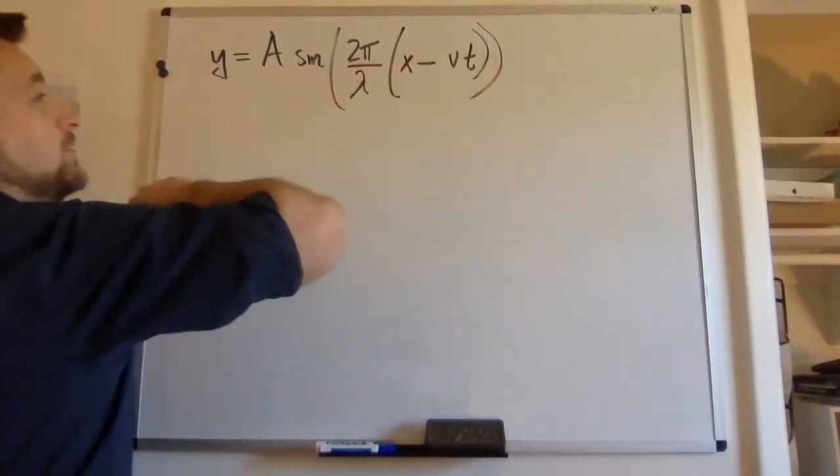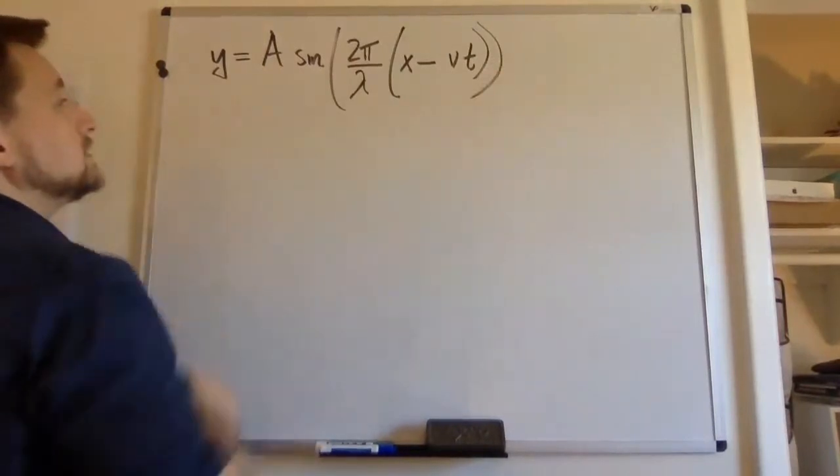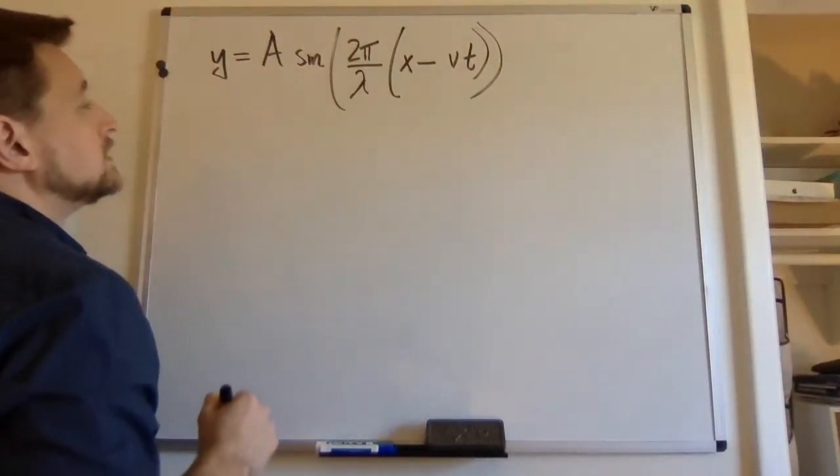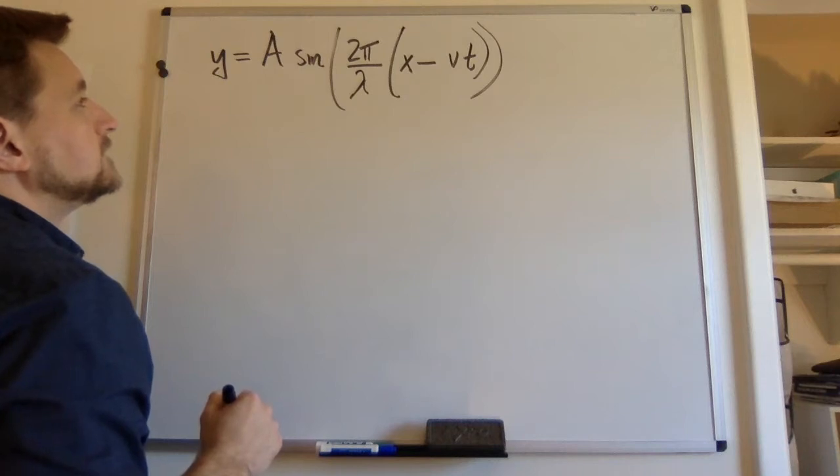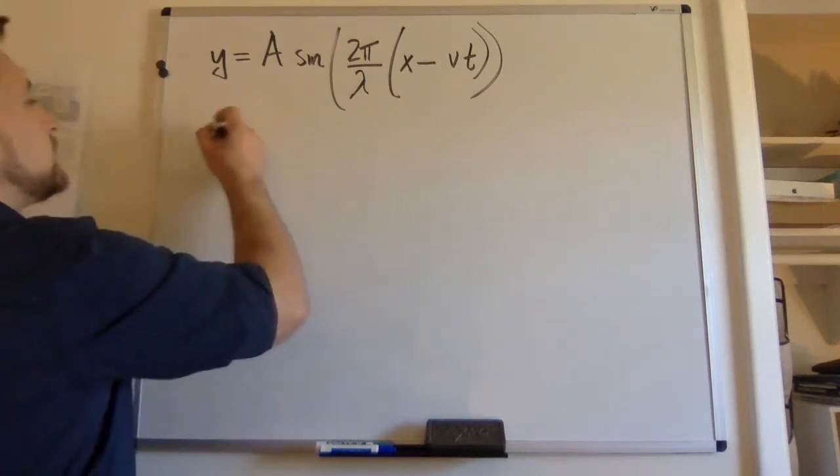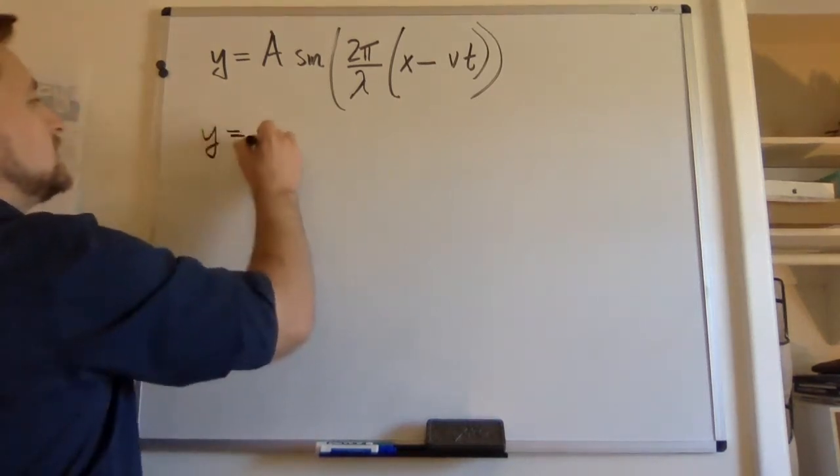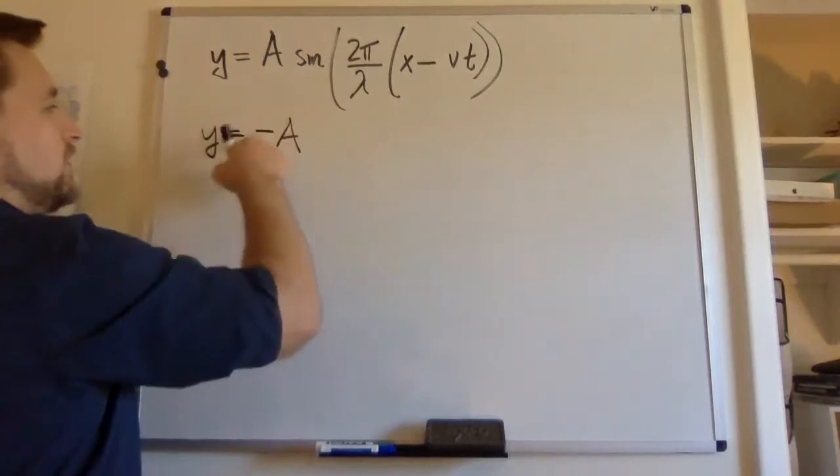This is a wave traveling to the right. A wave traveling to the left, and that is upside down.